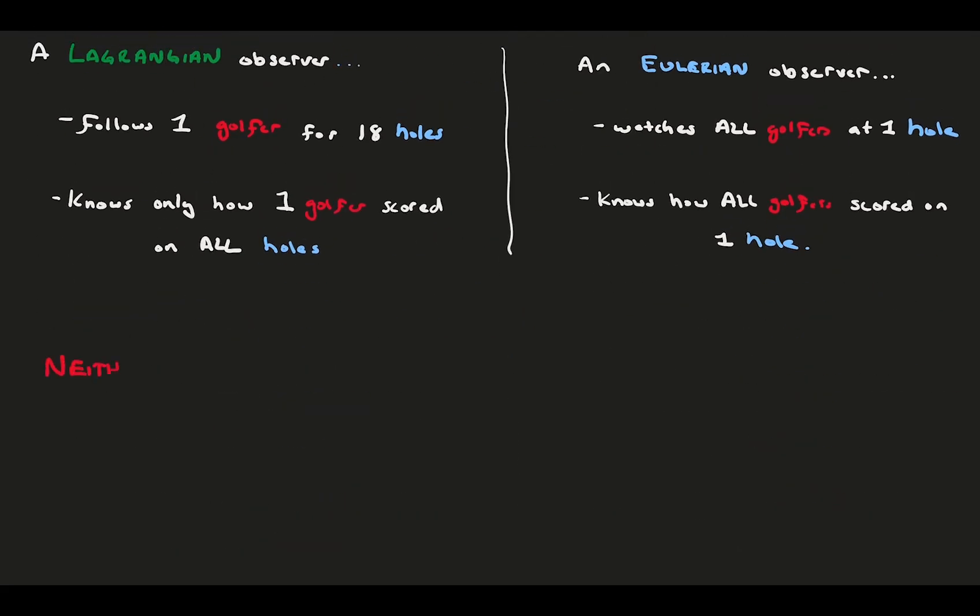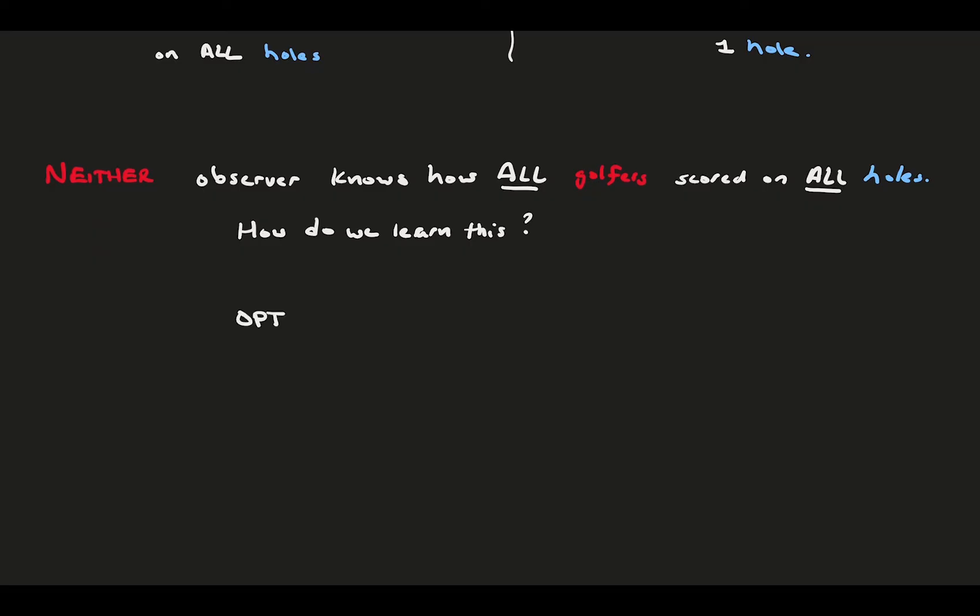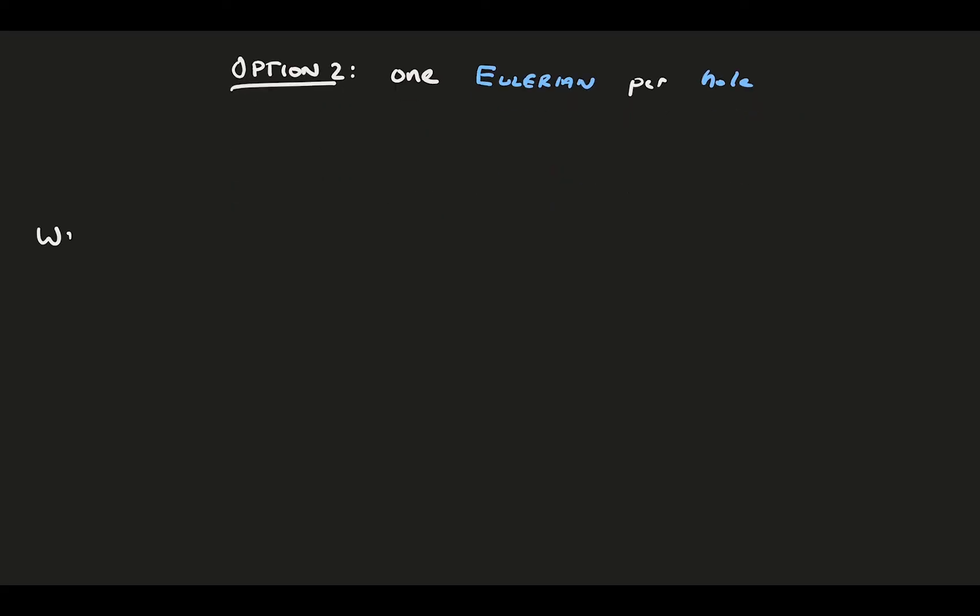Now, neither observer knows the true outcome of the tournament because they don't have all the necessary information. No one knows how all golfers did on all holes. To get the outcome, we need multiple observers. We could either have one Lagrangian observer per golfer or one Eulerian observer per hole. Both get you the necessary information, but with differing perspectives.